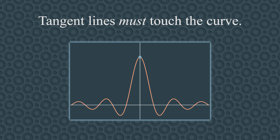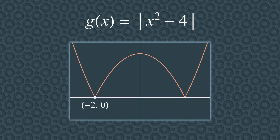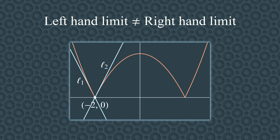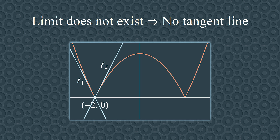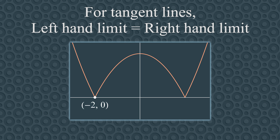This example highlights the fact that tangent lines must touch the curve. Next, look at the graph of the function g(x) equals the absolute value of x squared minus 4. Let's find the tangent line to the point. If you let P approach the point from the left, the secant lines approach the line l1. But if you let P approach the point from the right, the secant lines approach a different line, l2. So you get different lines depending on your direction of approach — the limit from the left is different from the limit from the right. Because the left-hand and right-hand limits are different, we say the limit does not exist, so there is no tangent line to that point.